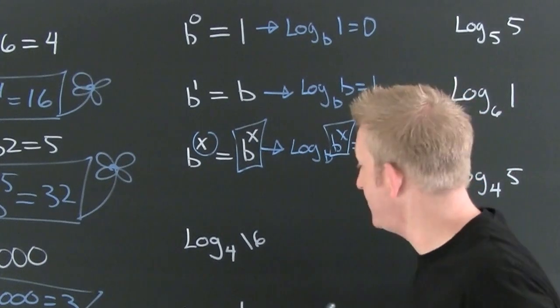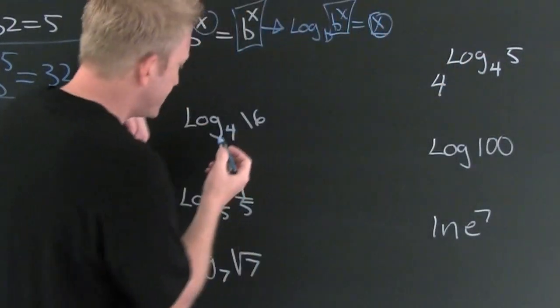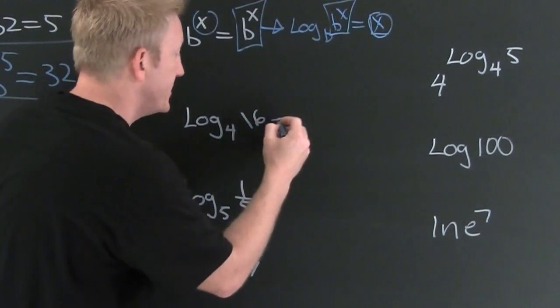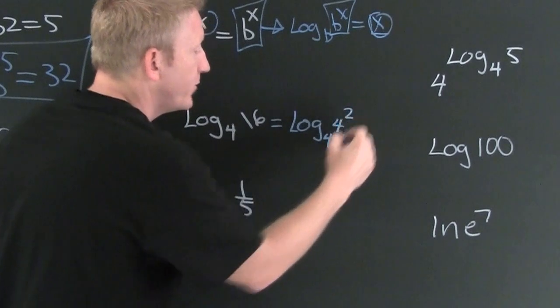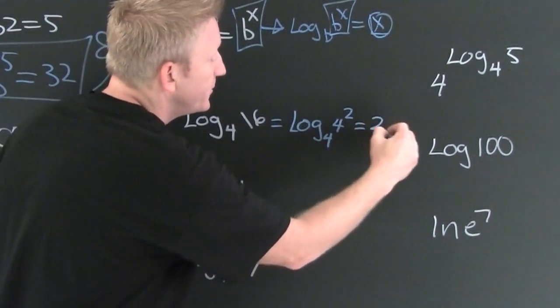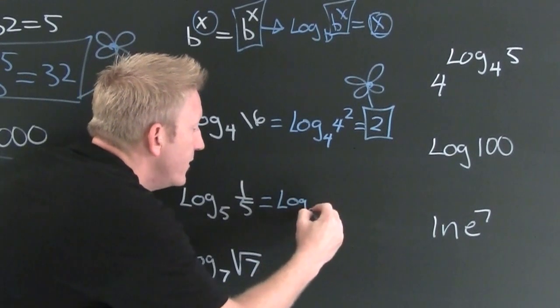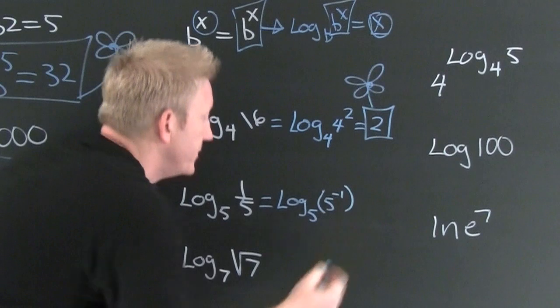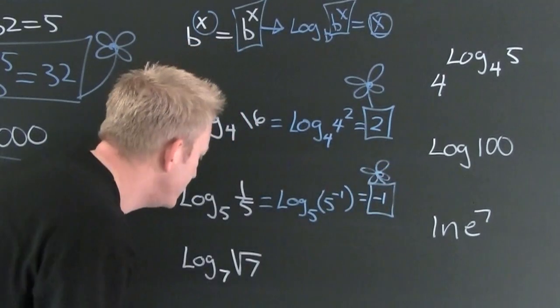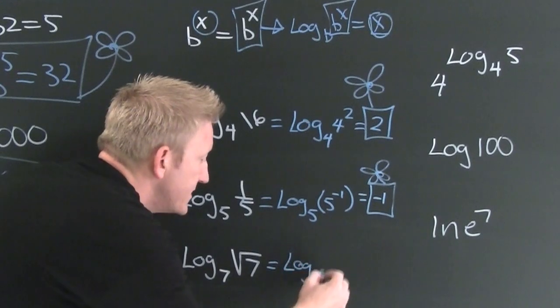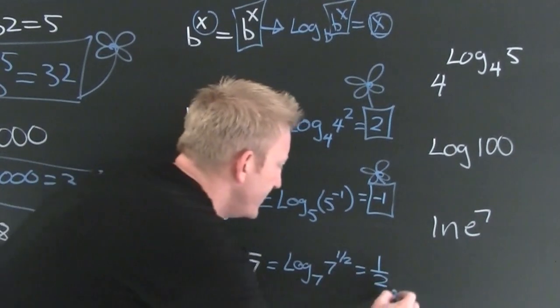This is the development of some log properties. Now that we've developed these log properties, let's go through and use them. Here, I want to find the same base so that I can use my log properties. So then this is log base 4 of 4 squared. So this is 2. And you're done. Down here. This is log base 5 of 5 to the minus 1. And what's that? Minus 1. You're done. This is log base 7 of 7 to the 1 half. What's that? 1 half. And then what? You're done.